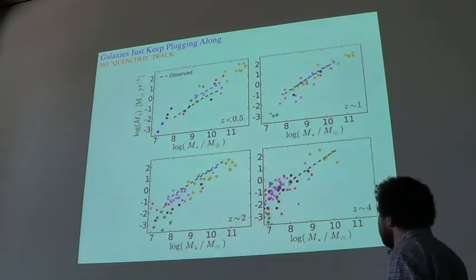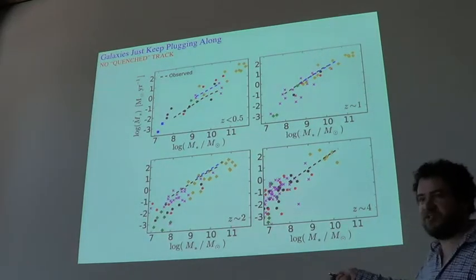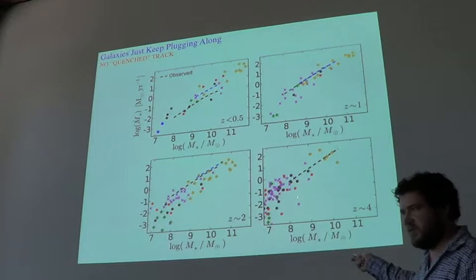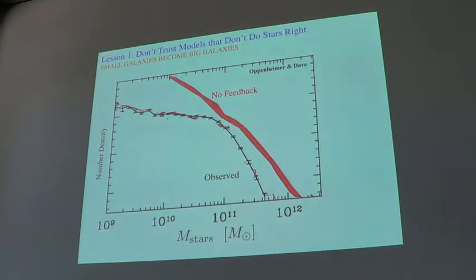Now, this is just another way of saying nothing's quenched. Here's the collection of new simulations just showing central galaxies at different redshifts on the star formation main sequence. And, you know, just look at the massive end. We have these massive galaxies and they just all, you know, keep tracking up along this main sequence. They just keep forming stars. So, what are the lessons we can learn from this? One is that it's important to do the stellar feedback right because you need to get these progenitors right.